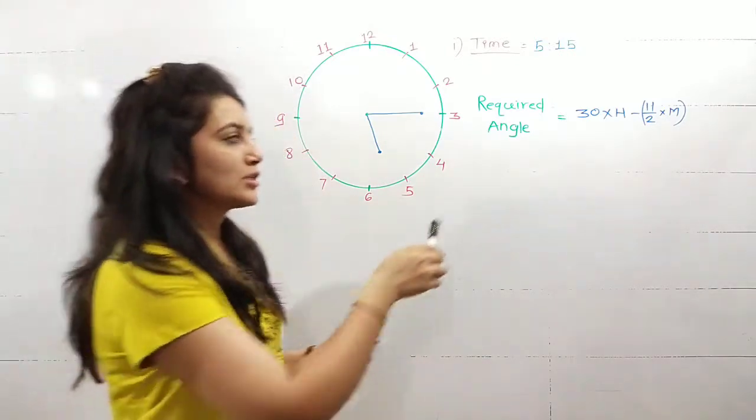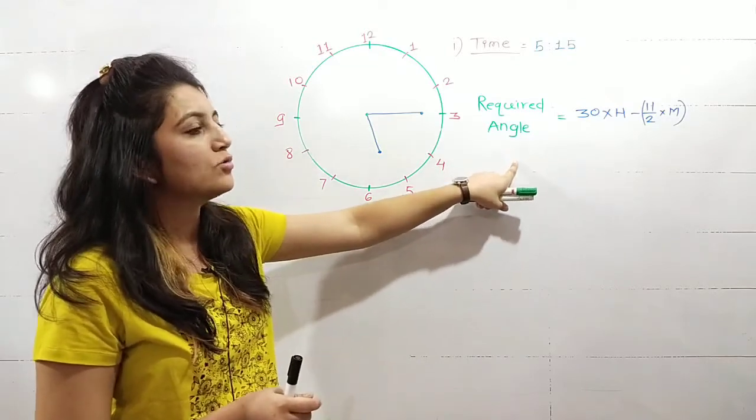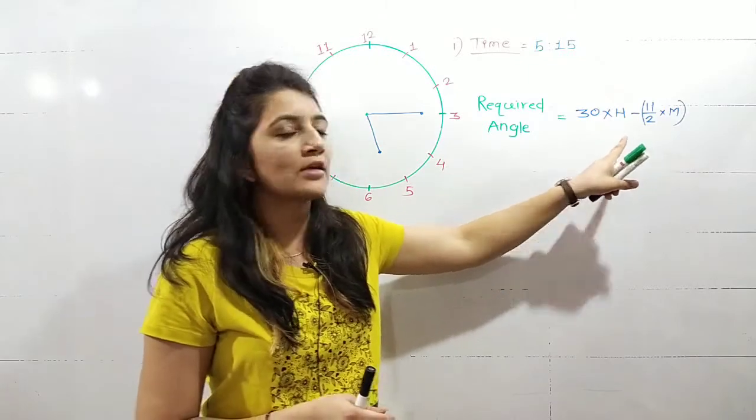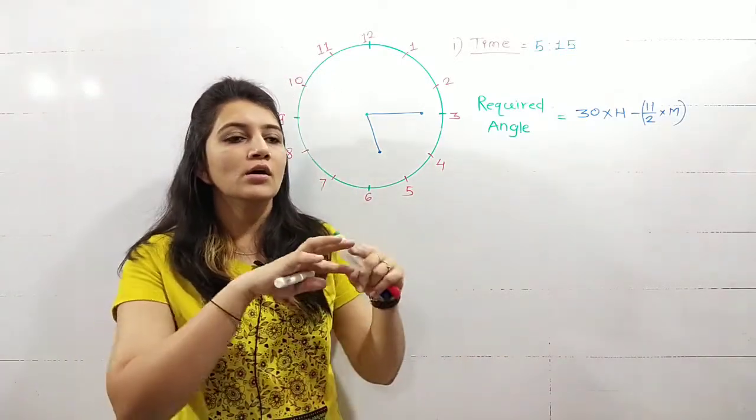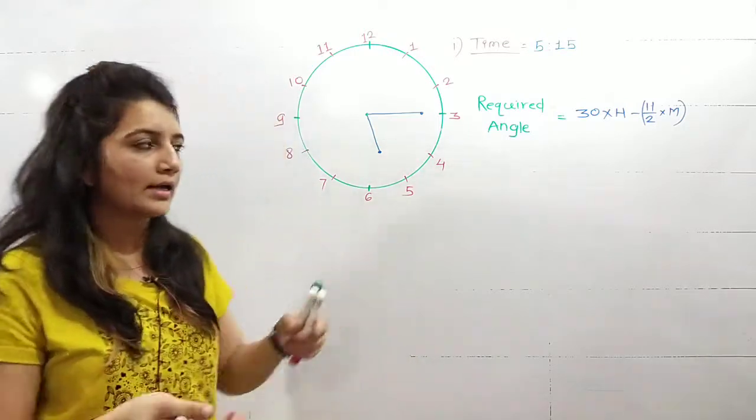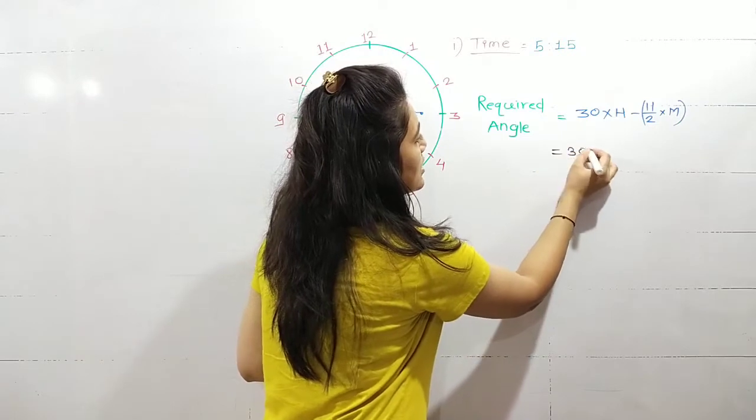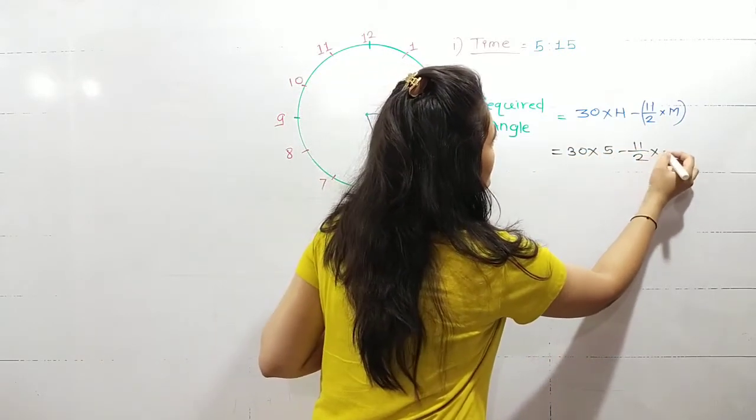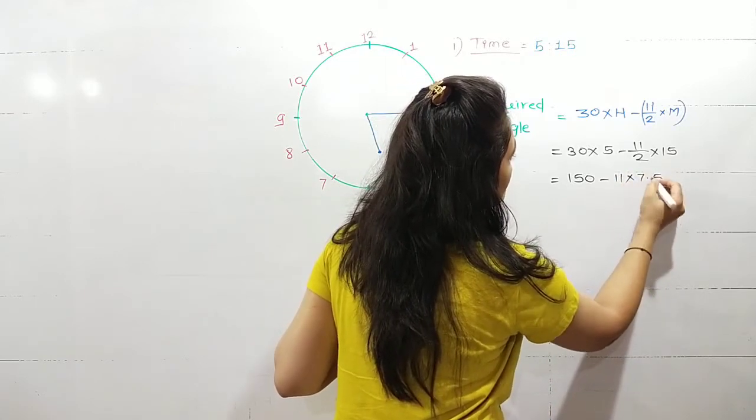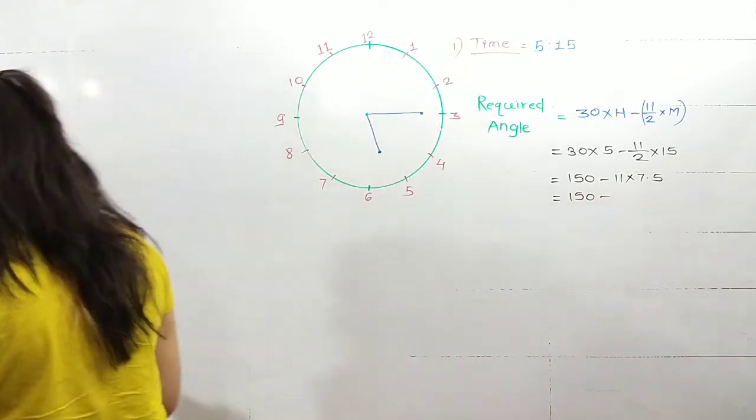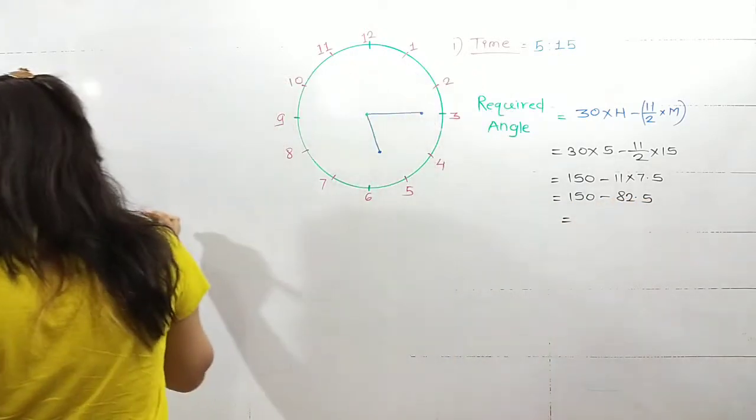The first timing is 5:15. These derivation instruments I will tell you shortly that hour hand rotates through half degree in one minute. And similarly minute hand rotates through half degree in one minute. So the difference is 11 by 2. This is nothing but a relative angle between hour hand and minute hand at the same minute. So what is required angle? Here h value is 5, so 30 into 5 minus 11 by 2 into 15, which is coming out as 30 into 5, 150 minus 11 into 7.5 is 82.5, which is again nothing but required angle will be 67.5 degrees.